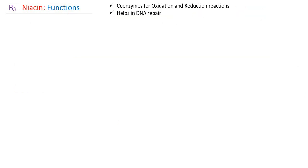Now we will concentrate on the functions of niacin. As we studied with riboflavin, niacin is also required for oxidation and reduction reactions in carbohydrate, protein, and lipid metabolism. The active form NAD+ is required for the oxidative pathway.